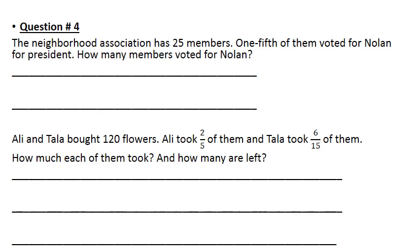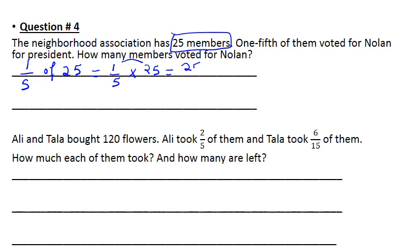Here we go to the last question. The neighborhood association has 25 members. One-fifth of them voted for Nolan for president — how many members voted for Nolan? So I know that one-fifth of 25. Instead of 'of,' I'm going to put times 25. You multiply the numerator, so you get 25 divided by 5 is 5. So 5 members voted for Nolan.